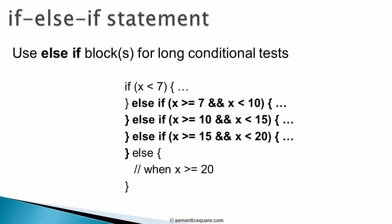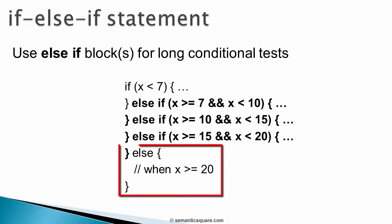For example, if x is 13, then the first two conditions would fail, and the third condition would be true. So after the corresponding body is executed, the fourth condition will not be tested. Now if none of the conditions hold true, then by default the code in the else block will be executed. Note that the else block is optional — you can have only if and one or more else-if blocks, and that would still be valid. But if you do have an else block, then it must be the last block; it cannot be followed by an else-if block.